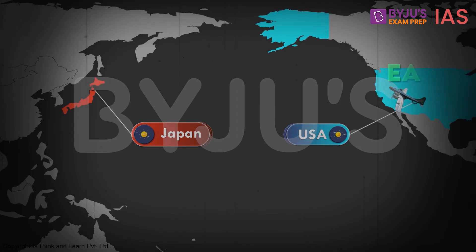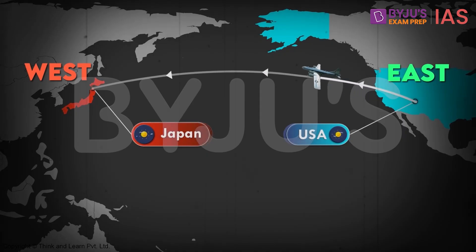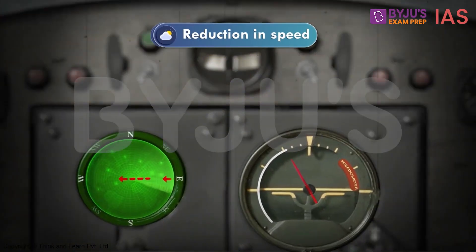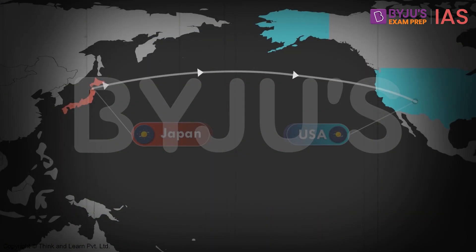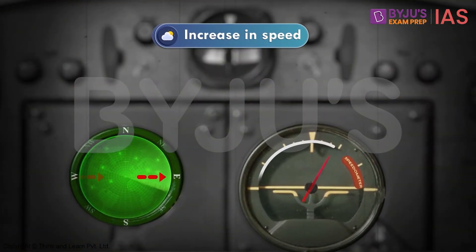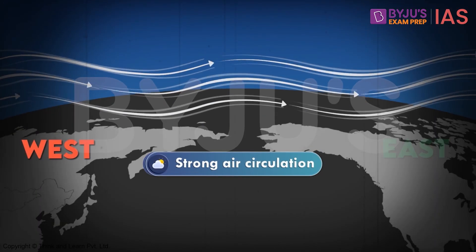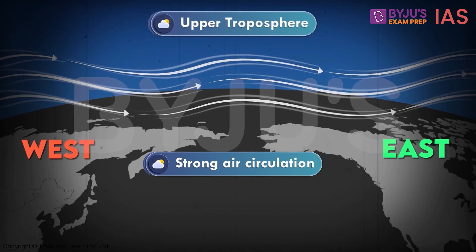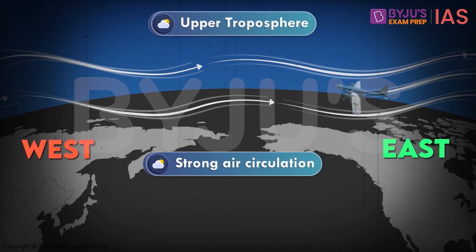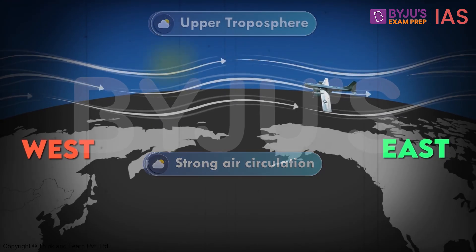While the jets were travelling from east to west — that is, starting from the U.S. and going towards Japan — these jets observed a significant reduction in their speeds. On the other hand, while coming back to the U.S. from Japan, that is, from west to east, they witnessed an increase in their speeds. After careful study of this phenomenon, it was found that there was a strong air circulation from west to east in the upper portion of the troposphere, which obstructed the free movement of these jet fighters. This strong air circulation was later named as jet streams.